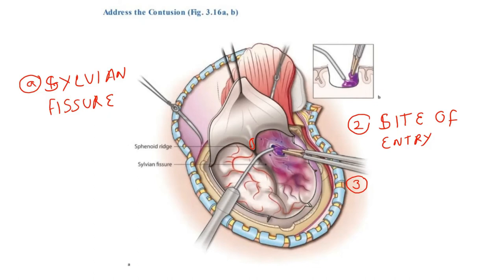Important pearls for this phase: you can identify the sylvian fissure with the help of the sphenoid ridge or the middle cerebral vein, but the sphenoid ridge is the more reliable landmark. When entering the cortical cavity, use a malleable retractor supported by a cotton patty moistened with saline — this helps in retraction and illumination while protecting the underlying brain. Evacuation of the hematoma is always best done with the help of the operating microscope.